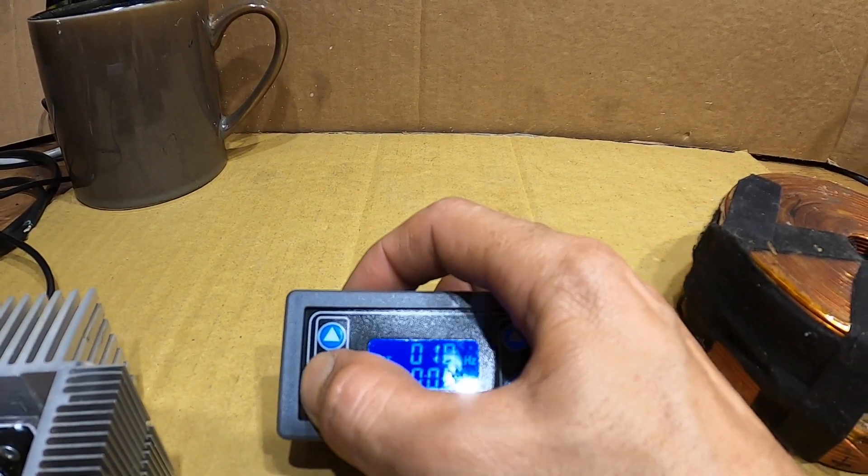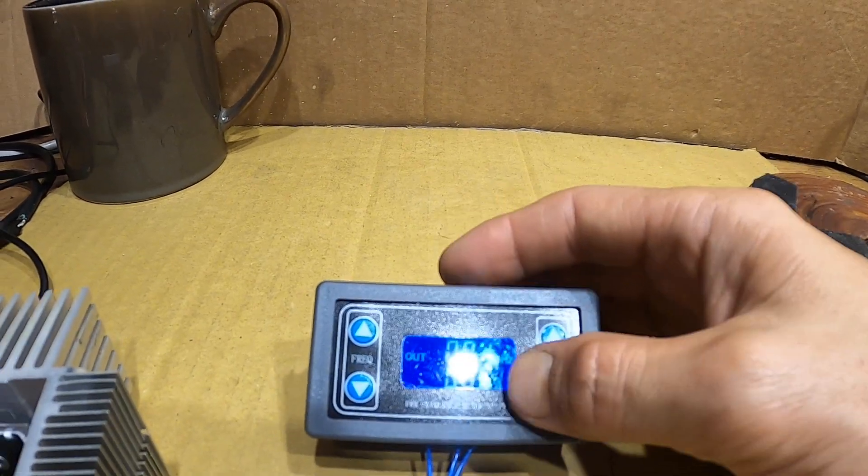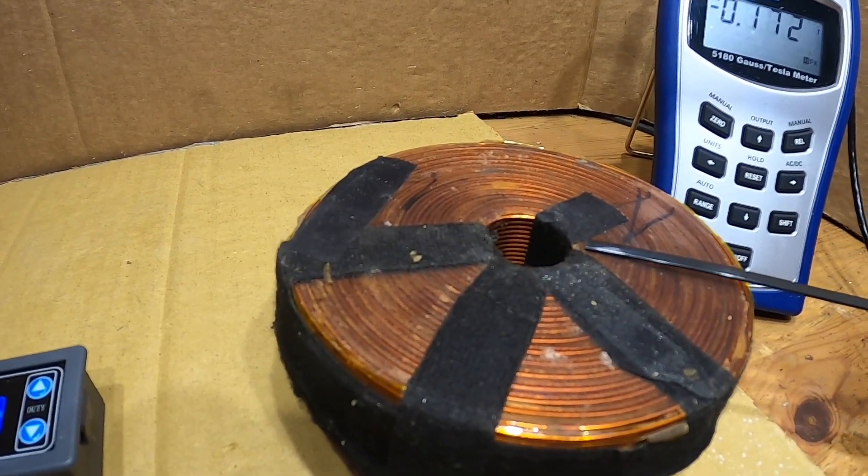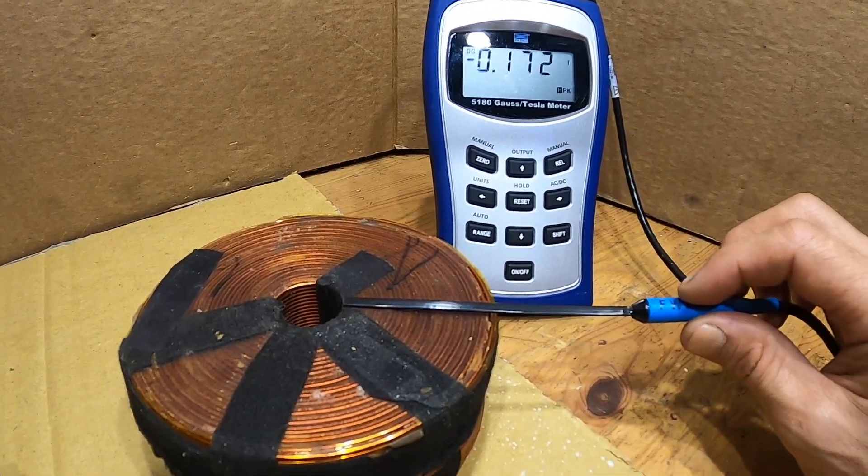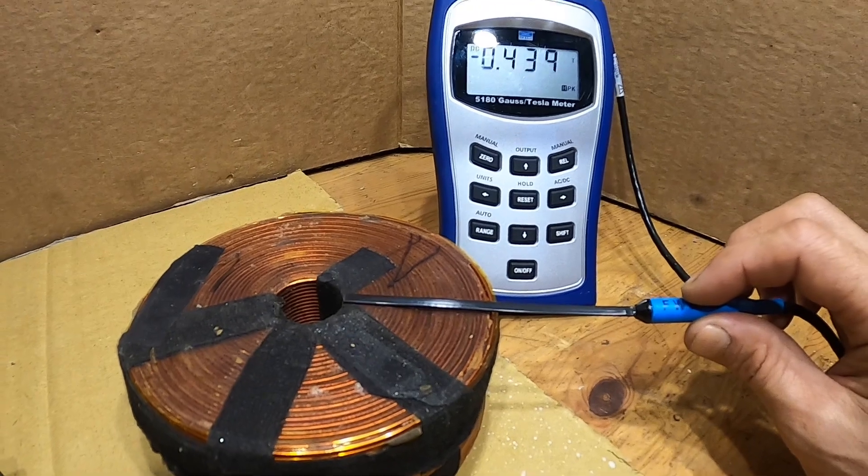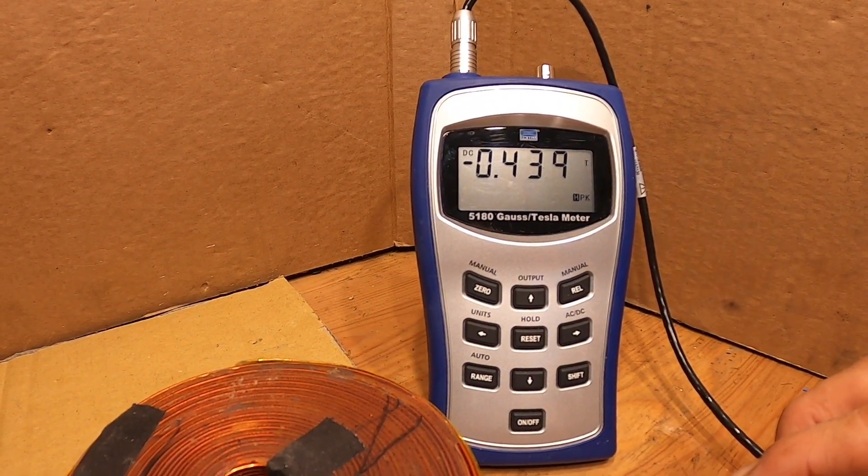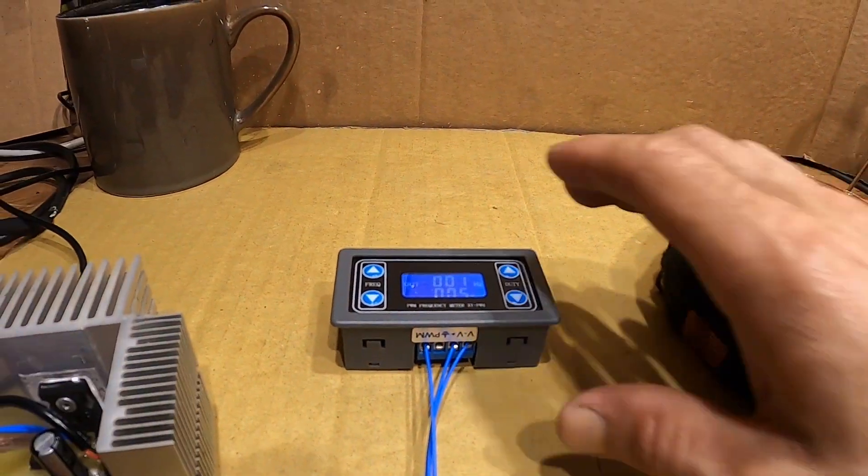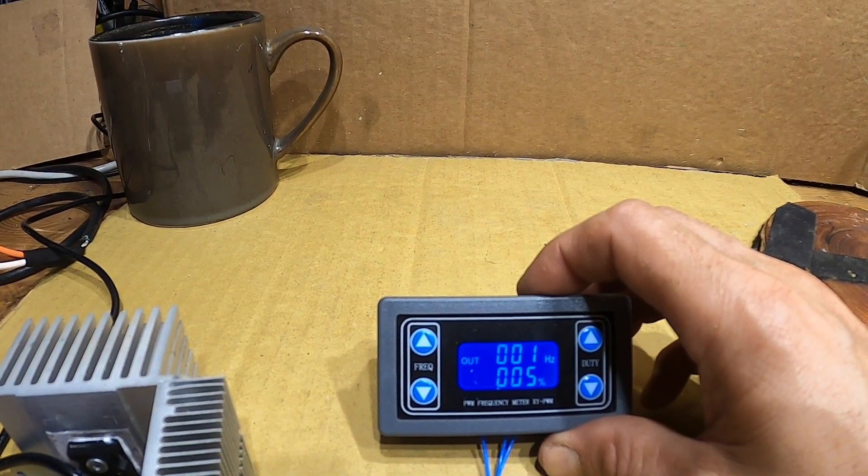Now I'd like to go down to one Hertz, and we'll keep it at five percent. We'll take one more measurement. Count three, one, two, three. All right, now we're getting 0.439 Tesla, okay, that's at five percent duty and one Hertz.